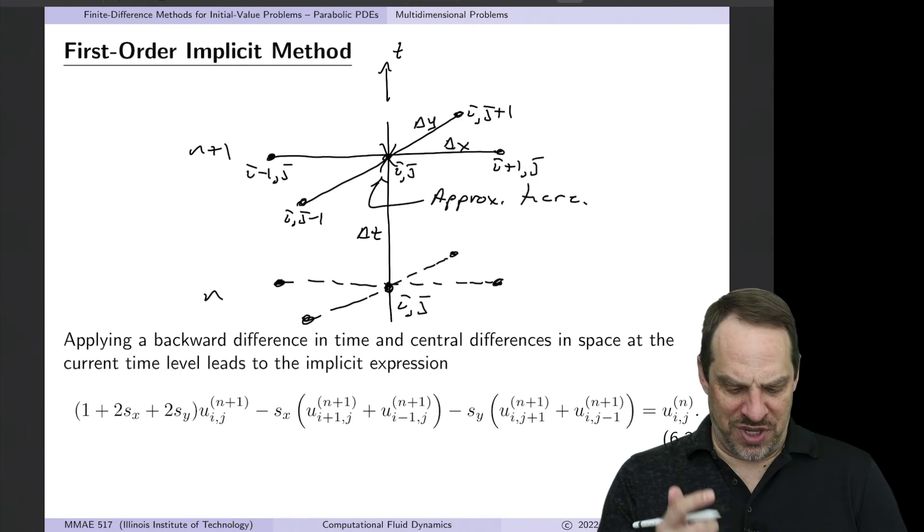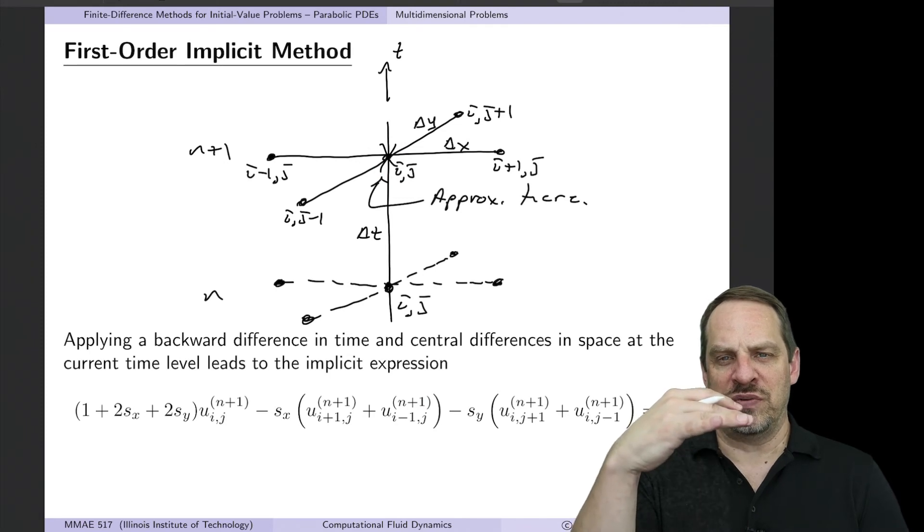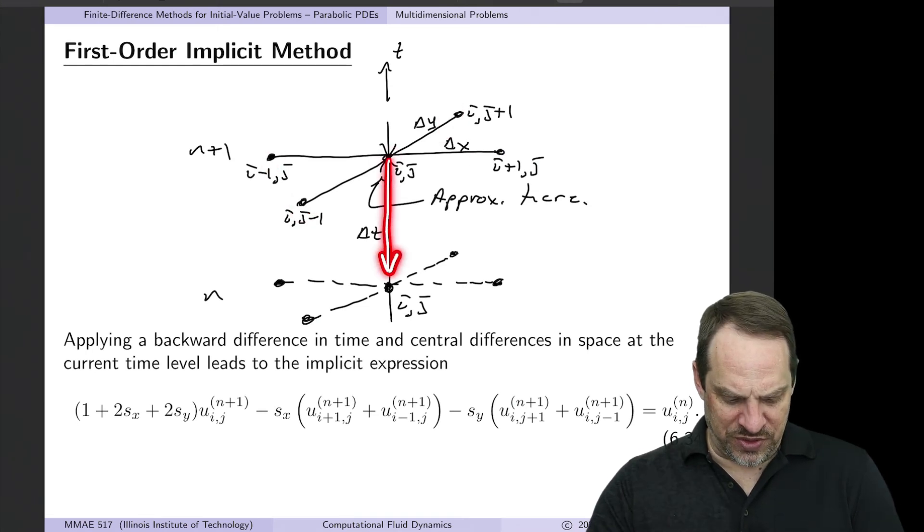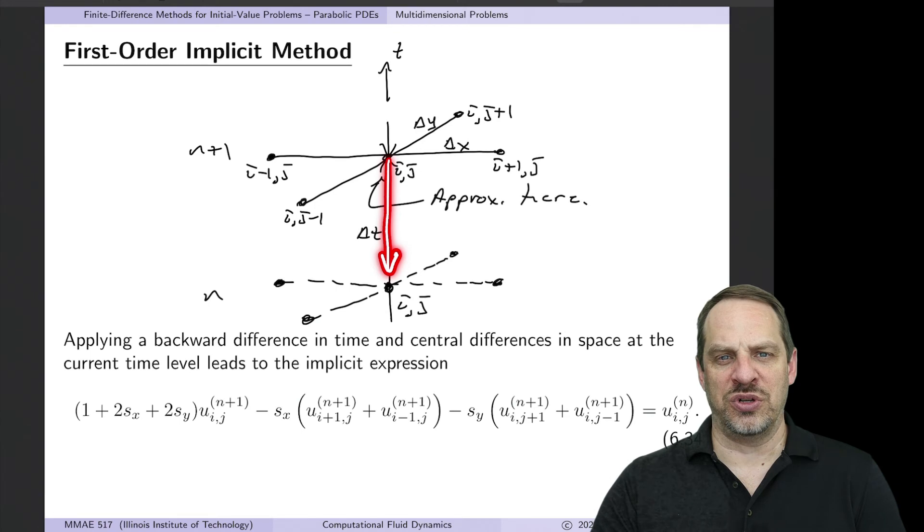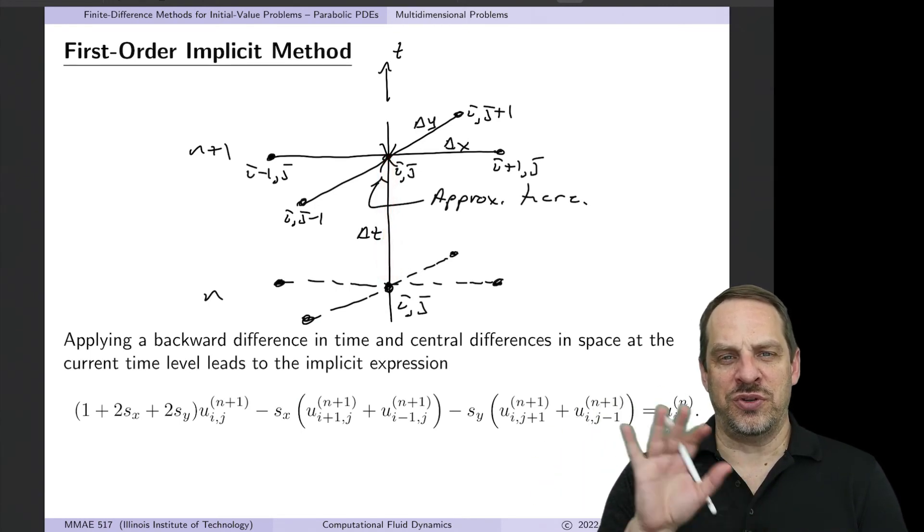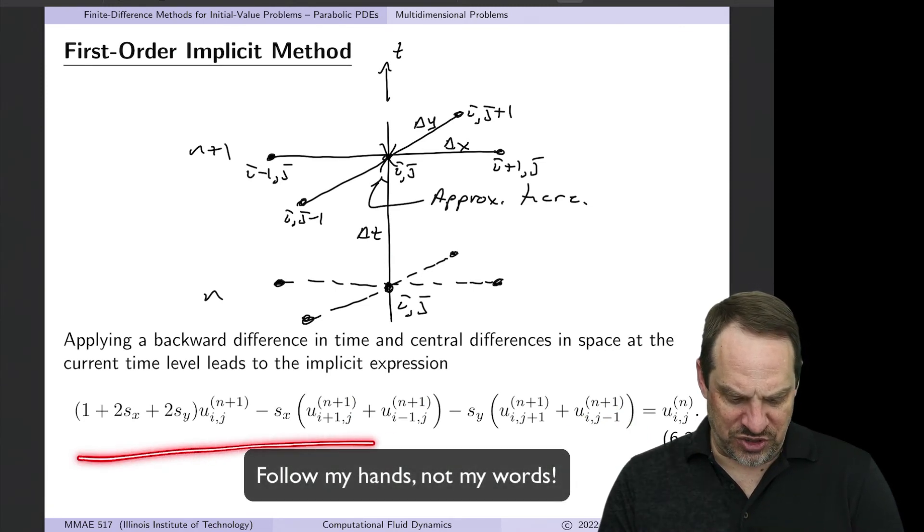Now for the first-order implicit method, remember the x marks the spot is at the n plus first time level. So now all the spatial derivatives are taking place at that n plus first time level. That's where the five-point stencil is. And then we use a backward difference in time for the partial u partial t term, just like in the 1D case. When you do that, you simplify it, put all the unknowns on the left, the knowns on the right, you get this expression here.